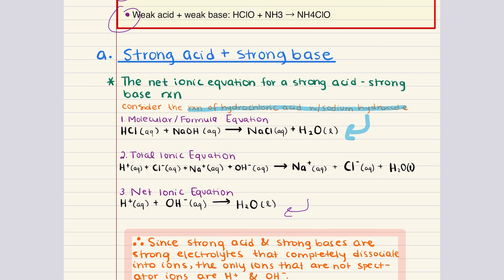If we write the total ionic equation, both the strong acid and the strong base completely dissociate in water. So we write hydrogen cations plus chloride anions for hydrochloric acid, and sodium cations and hydroxide anions for sodium hydroxide. For sodium chloride, we write sodium cations and chloride anions, and then water. We notice that sodium cations and chloride anions appear on both the reactant and product side — they are spectator ions. What we're left with is the reaction of hydrogen cations and hydroxide anions to form water, resulting in a neutral solution with a pH of 7.